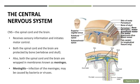In our central nervous system, we have two main structures: our spinal cord and our brain. Their job is to receive sensory information and initiate motor control. Both are protected by bone — the brain is protected by the skull or cranium, and the spinal cord is protected by vertebrae. Both structures are also protected and supported by membranes known as meninges.